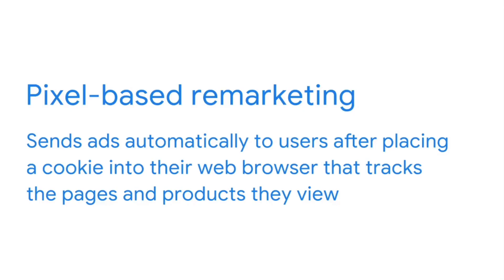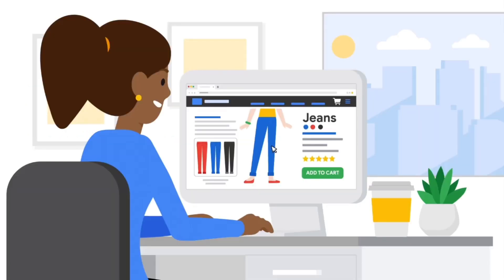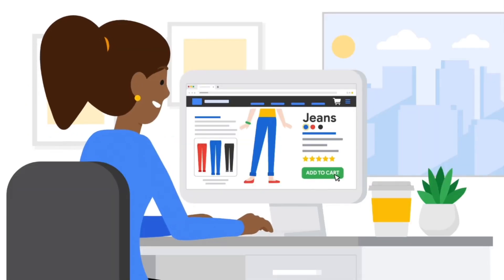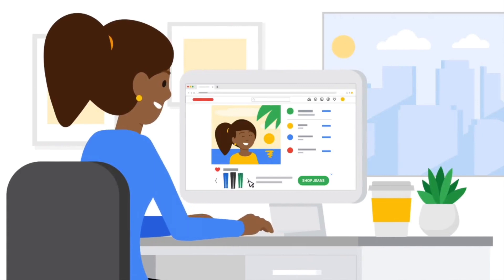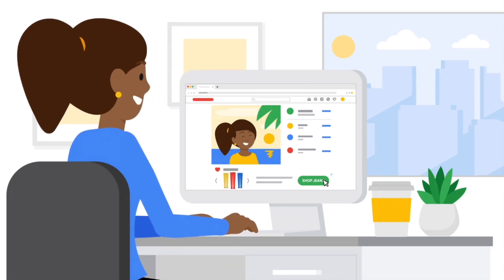There are two main types of remarketing: pixel-based and list-based. Pixel-based remarketing sends ads automatically to the user after placing a cookie into their web browser that tracks the pages and products they viewed. A cookie is a small file stored on devices that allows you to track user behavior and analyze traffic. When the user leaves your website and browses their social media profiles or other websites, ad networks like Google Ads or Facebook Ad Manager are notified to display specific ads to that user based on what they looked at previously.